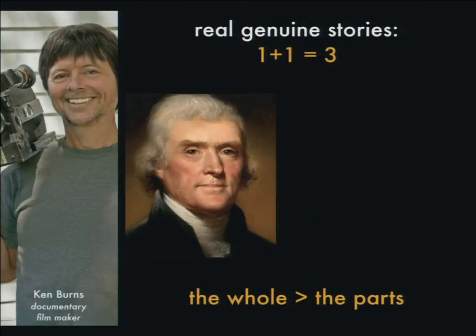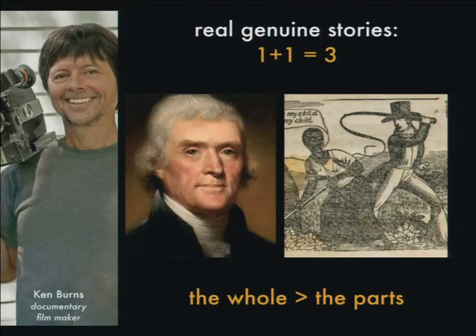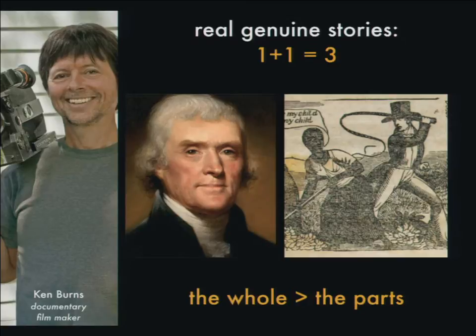This is very similar to what Ken Burns talks about when it comes to really great storytelling. He talks about real genuine stories being greater than the sum of the parts. One of his anecdotes is that Jefferson tells us all men are created equal — you might have all kinds of historical and emotional things associated with Thomas Jefferson. But when you juxtapose Jefferson against slavery, you have somebody writing that all men are created equal while owning over 100 people — someone who never came to terms with that contradiction in his own life, and the contradiction of the times. Each piece on its own is an amazing story, but if you put them together, it's emotional fireworks.